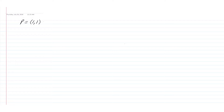Now let's talk about finding perpendicular lines using the same format. We're given the point one comma one, and we want a line perpendicular to y equals negative two-thirds x plus four. The slope of the perpendicular line is going to be positive three over two. Remember, the perpendicular slope is the negative reciprocal of the slope of the given line.